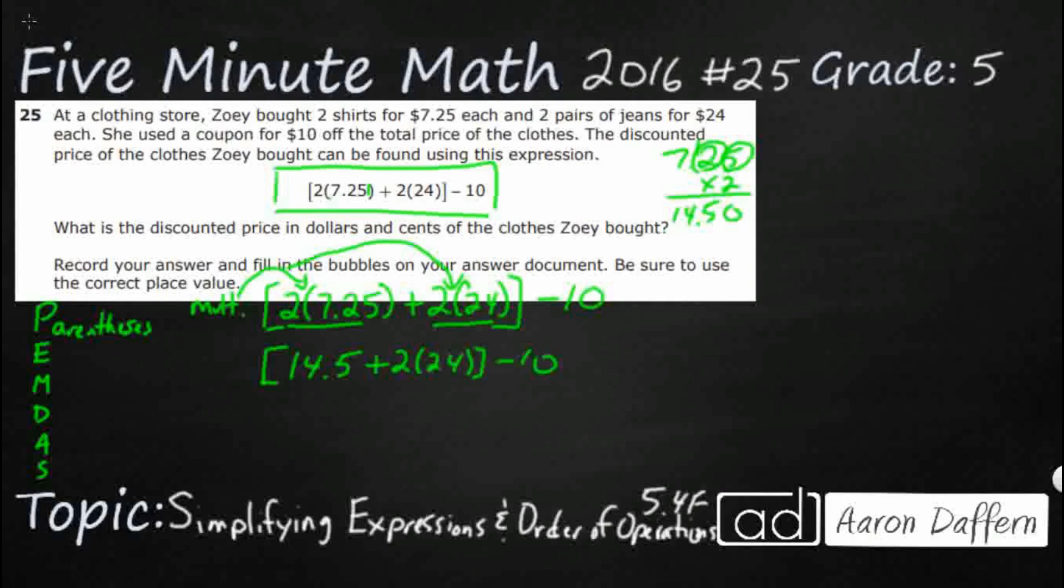We're going to tag this other parentheses next here. The 2 parentheses 24. That's simply going to be a multiplication. I've got 14.5 plus 2 times 24. That's going to be 48 minus 10.